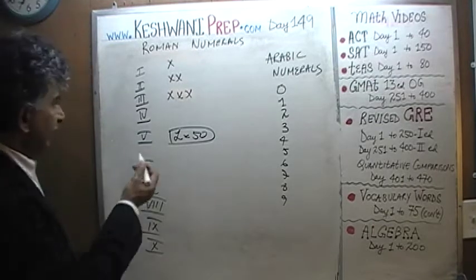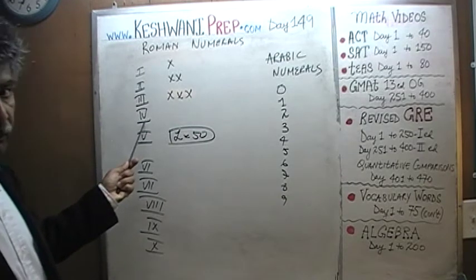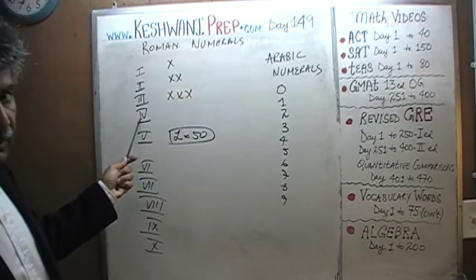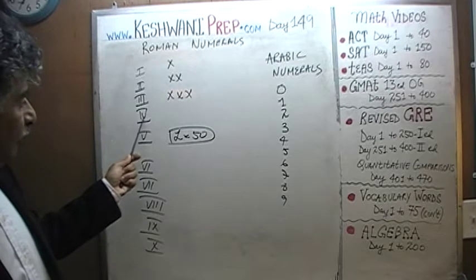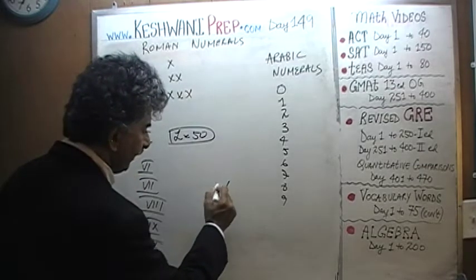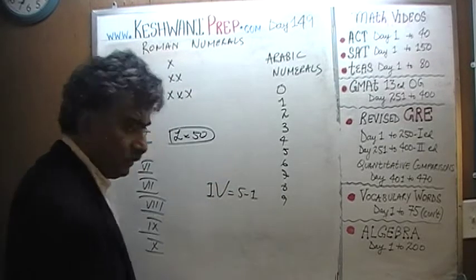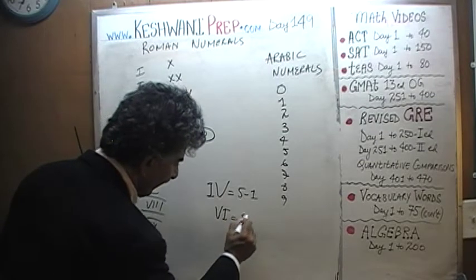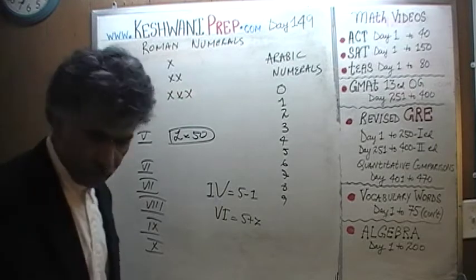Just like when we want to write 5 — the only way the Romans knew how to write 4 is: they would write 5, and subtract 1. If a lower value number appears to the left of a higher value number, we are supposed to subtract it. So here is 5. If you write 1 to the left of it, it is 5 minus 1, which is 4. If you write 1 to the right of it, it is 5 plus 1, which is 6.